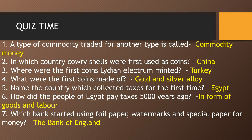Which bank started using foil paper, watermarks, and special paper for money? The name of the bank is the Bank of England. Thank you. Have a nice day.